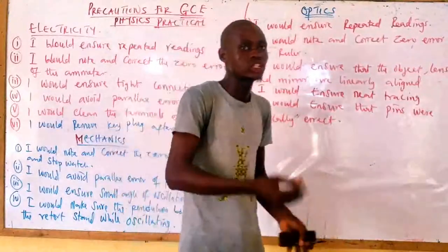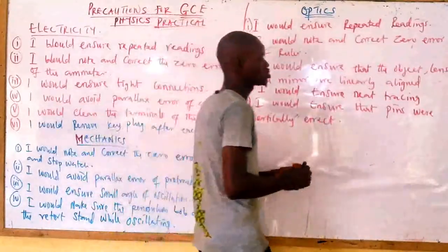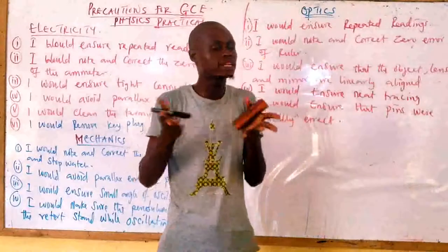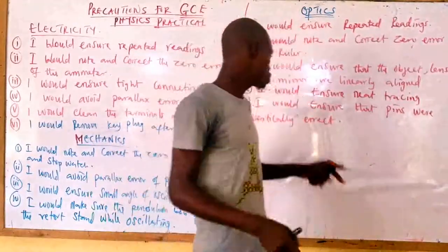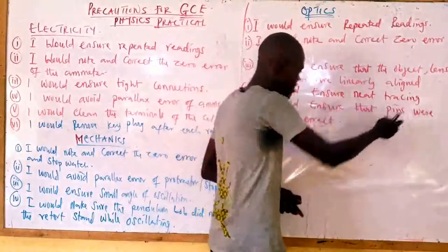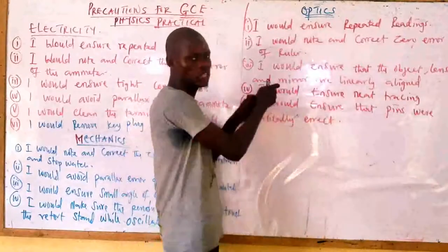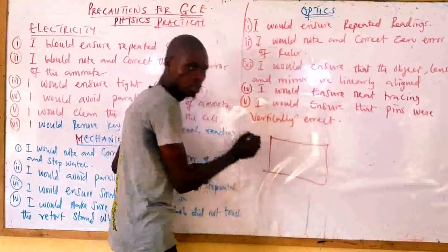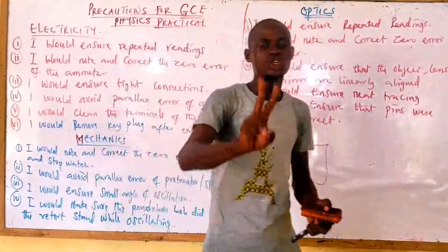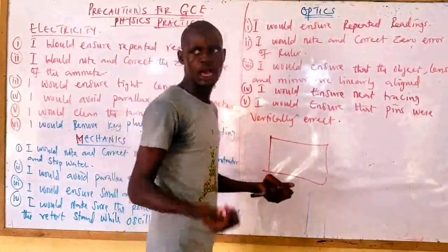Another precaution is: I would ensure neat tracing. You use this precaution only if you are performing an experiment on a prism block — either a rectangular or triangular prism block — because in that experiment you will be tracing. Finally: I would ensure that pins were vertically erect. This is also for the prism block experiment. Normally in this practical you only need two precautions, so you can give these two if your question is on a prism block.